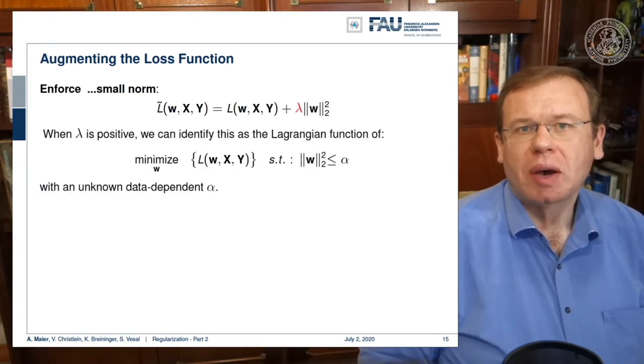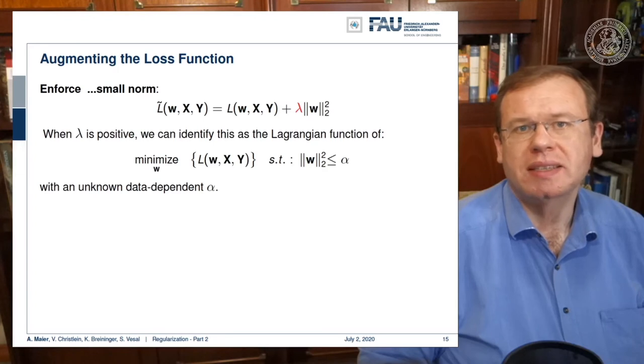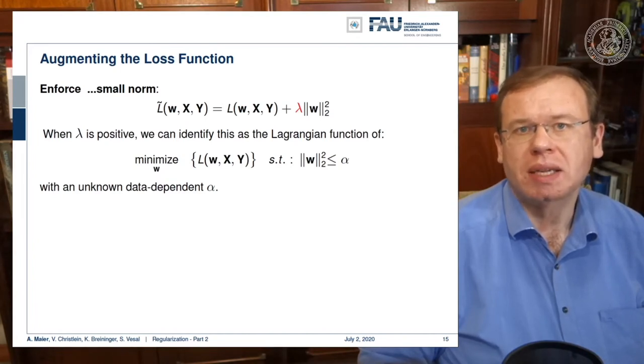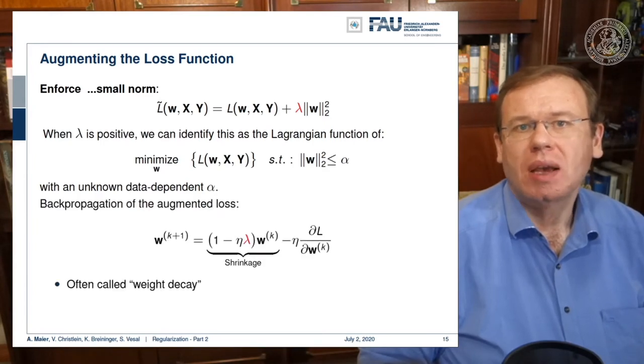Now with a positive lambda, we can identify this as the Lagrangian function of minimizing the loss function subject to constraint L2 norm of w being smaller than alpha with some unknown data-dependent alpha. So this is exactly the same formulation.